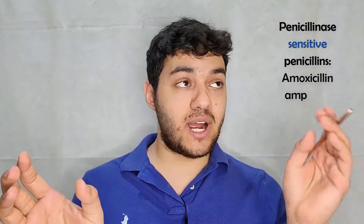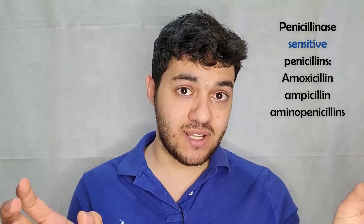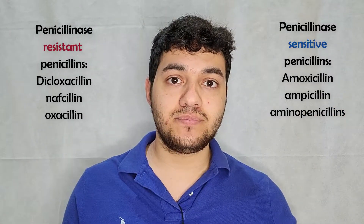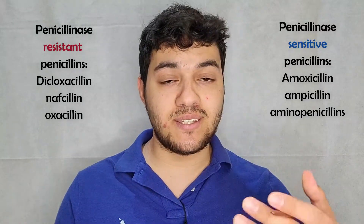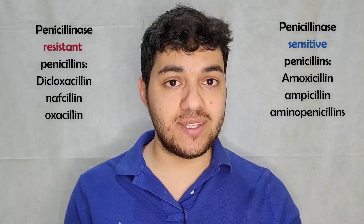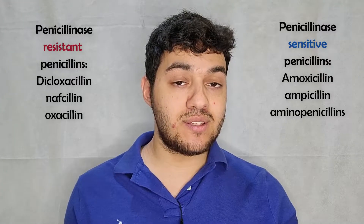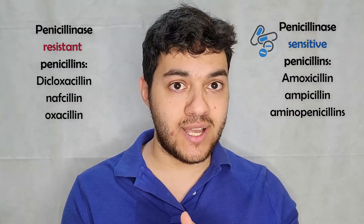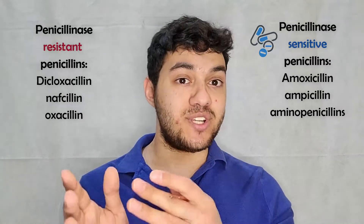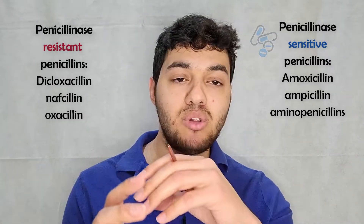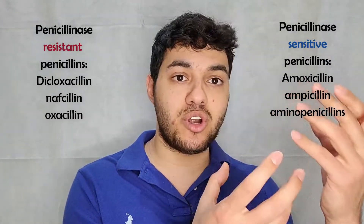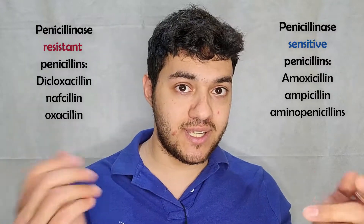We can subdivide penicillin medications into two groups: penicillinase-sensitive penicillins and penicillinase-resistant penicillins. Penicillinase-sensitive penicillins will be broken down by penicillinase, so the patient must also take a penicillinase inhibitor like clavulanic acid. Penicillinase-resistant penicillins have a bulky R group in their molecular structure, which makes the drug more resistant to penicillinase.